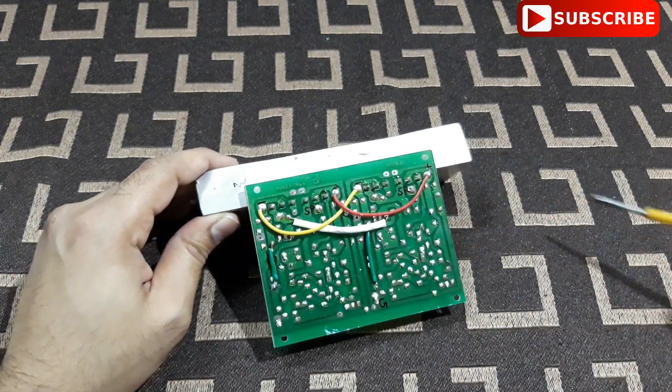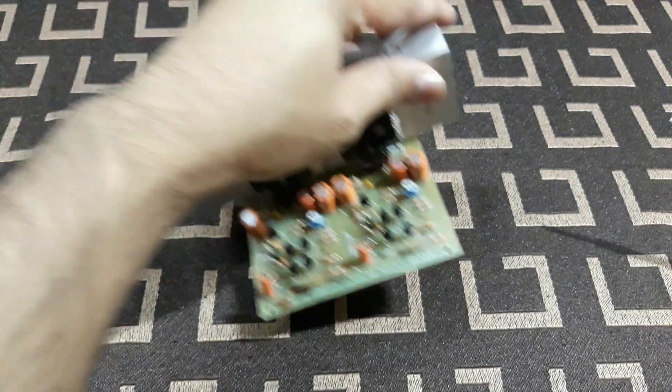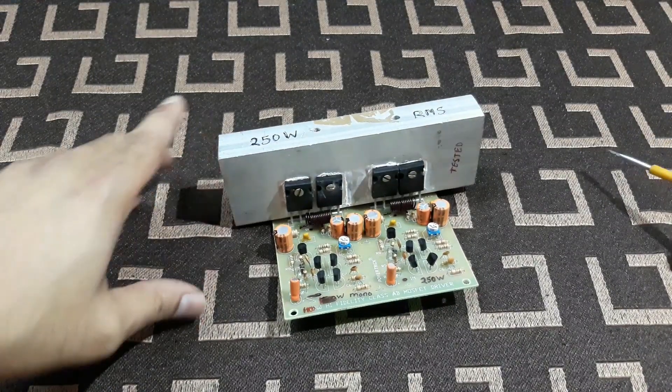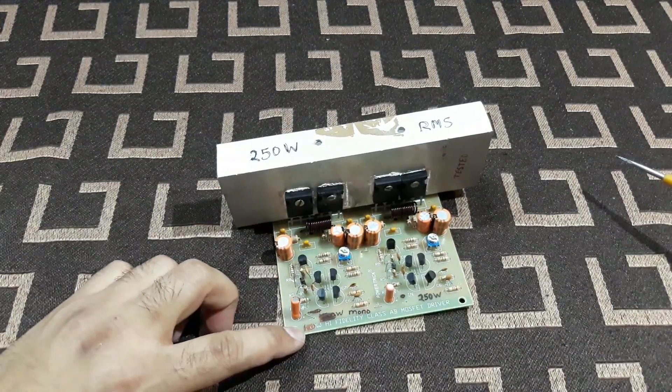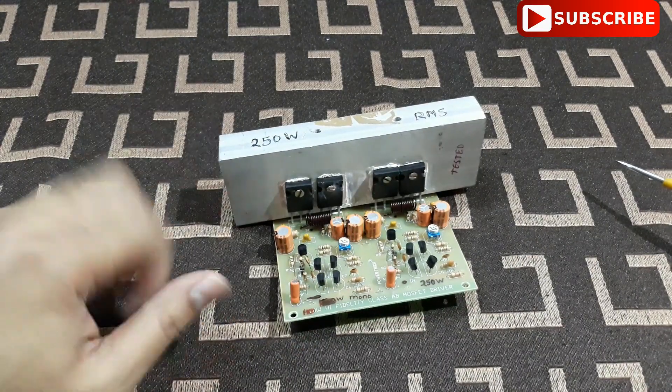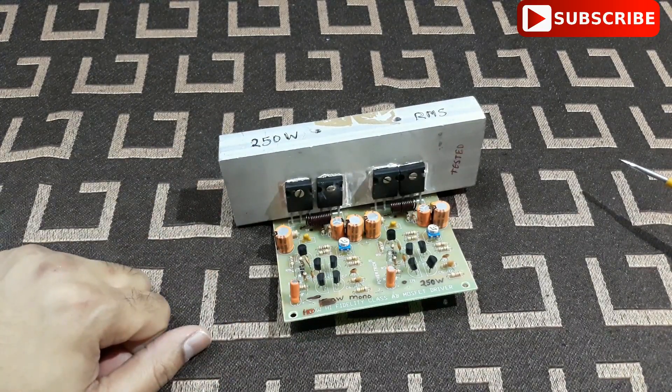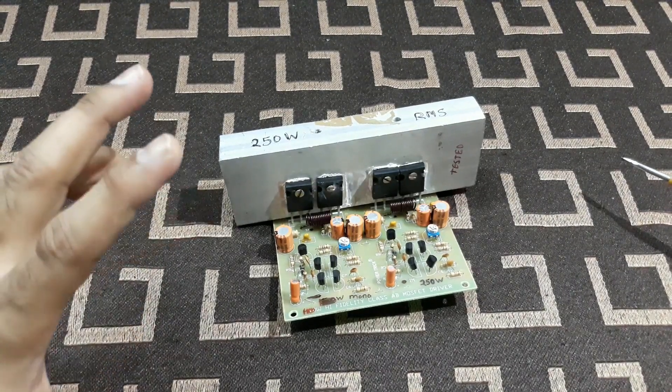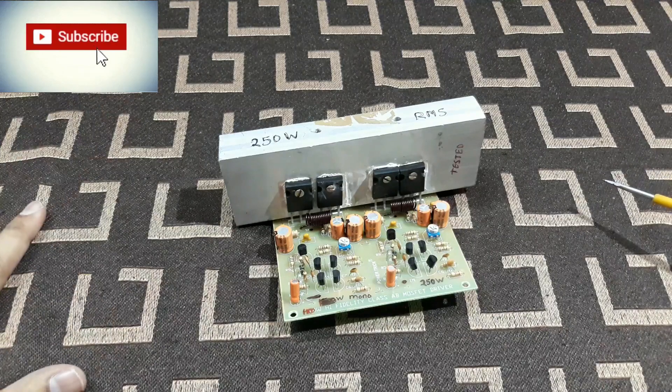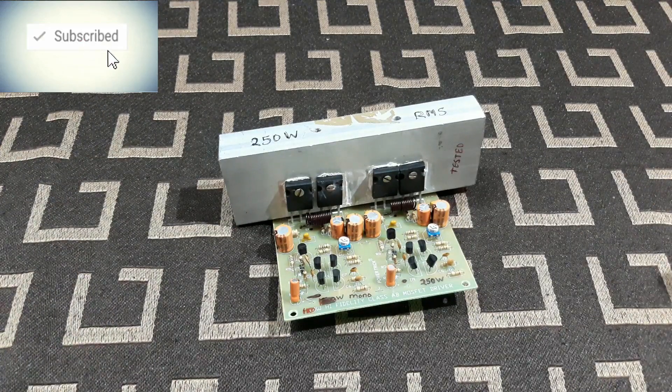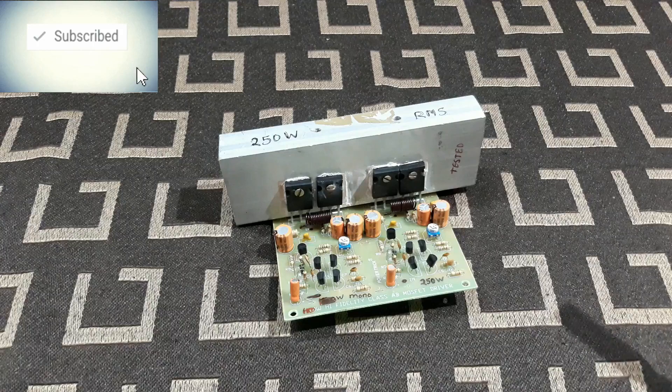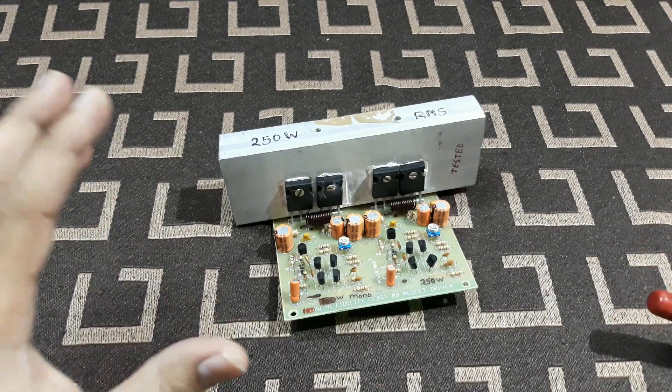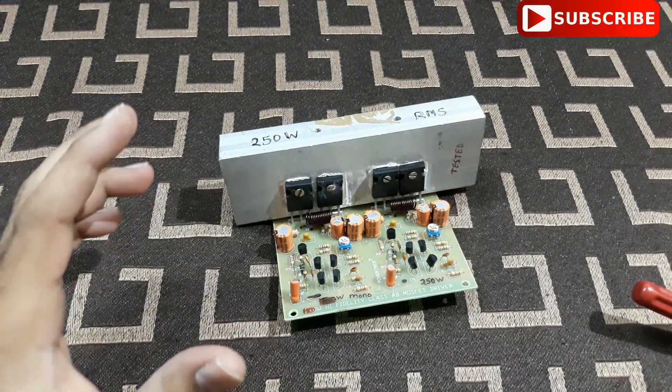It needs, I would say, 24-0-24 to 30-0-30 transformer. From there you need to use a good rectifier kit with at least four capacitors of at least 6500 microfarad each. That will give you a very good proper DC power supply and that is going to carry the kit amperage from the transformer.